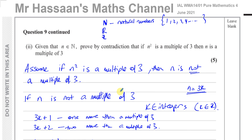If you'd like to see other questions about proofs, go to the playlist that appears at the end of the video. For other questions from this June 2021 P4 paper, click the link that appears on screen. You can also subscribe and find other Edexcel International A Level papers — P1, P2, P3, M1, S1 — as well as Cambridge IGCSE 0580 questions in the playlists. Thank you for watching and see you soon.